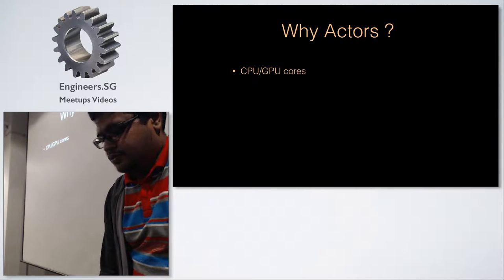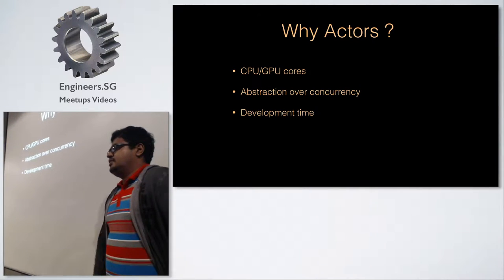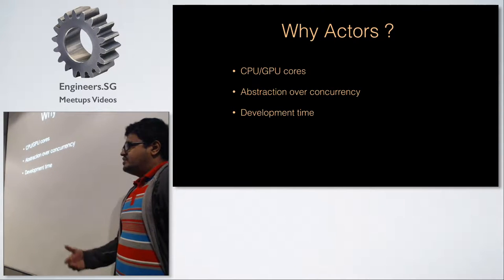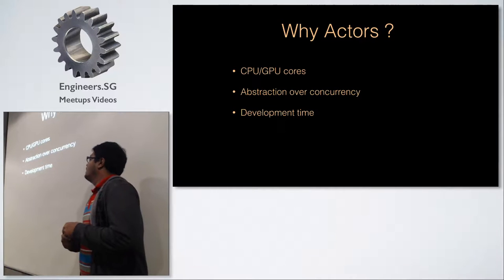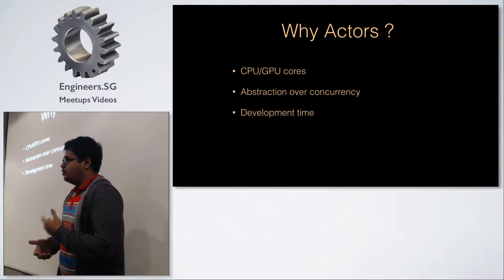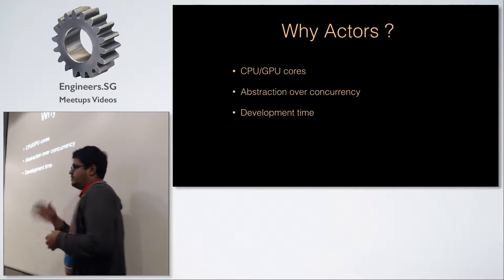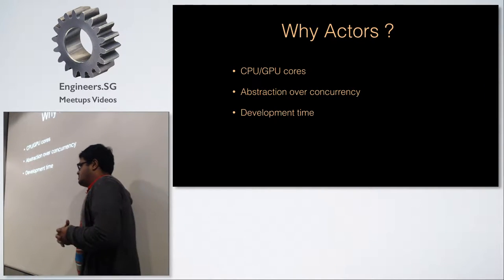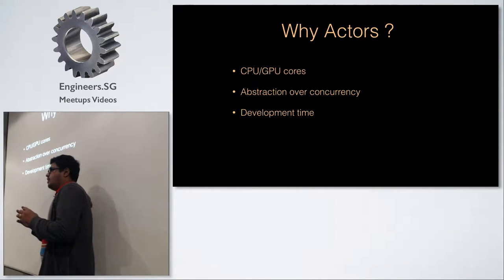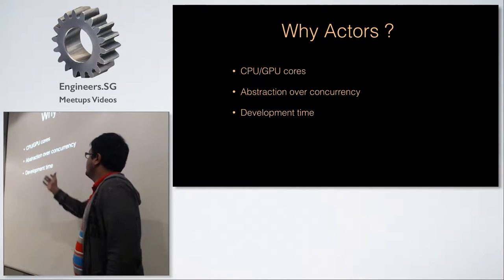Why actors? There are three generic reasons. First, the number of CPU cores is increasing, which means we'll be writing more concurrent code going forward. We're not very good at managing this ourselves, so it needs to be abstracted. One analogy is garbage collection — we used to do manual memory management, and we know how many issues that caused. If there's an abstraction for concurrency where the system takes care of it, we just use the right constructs.